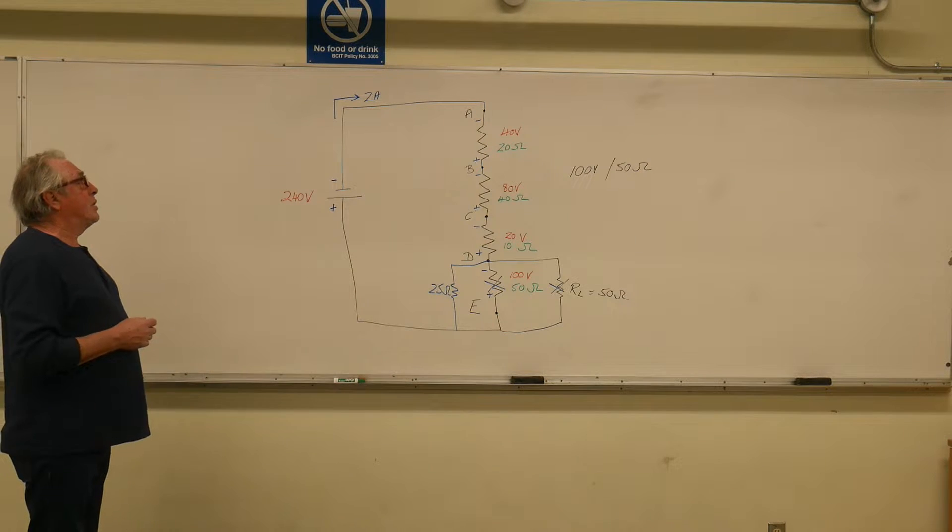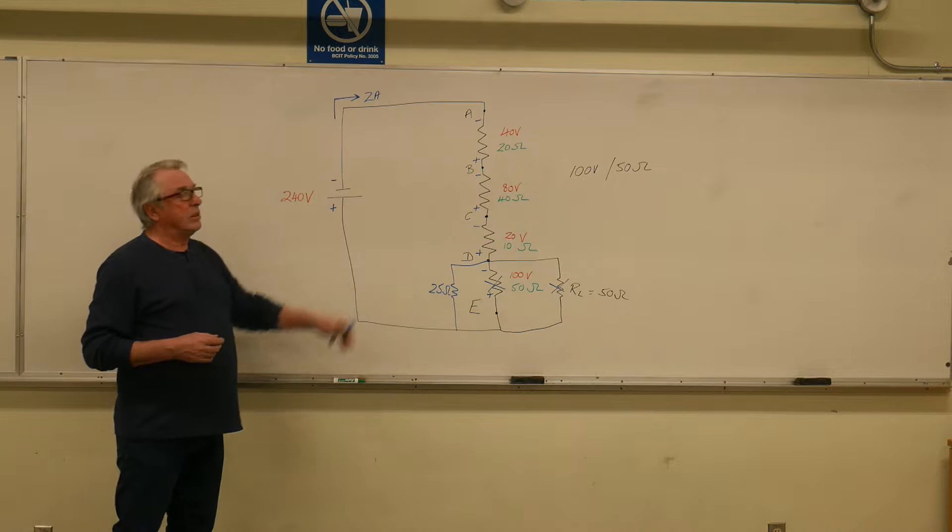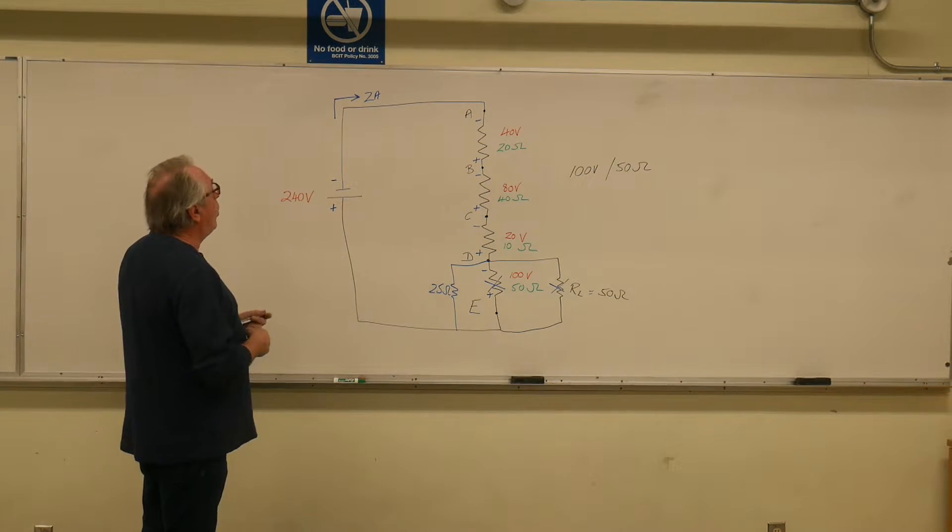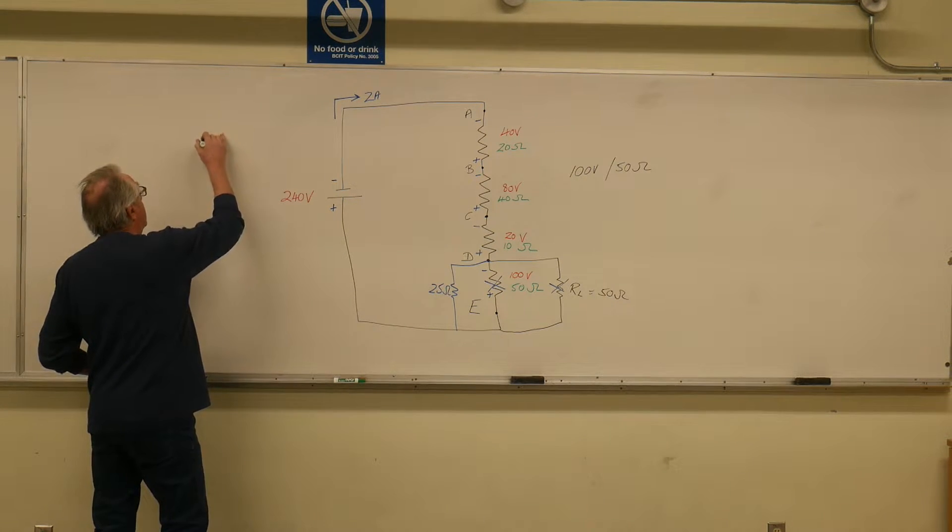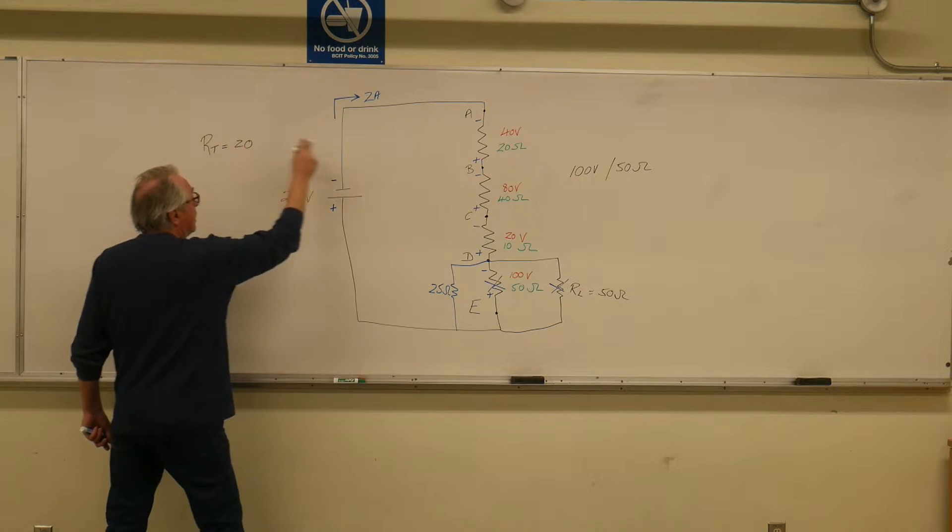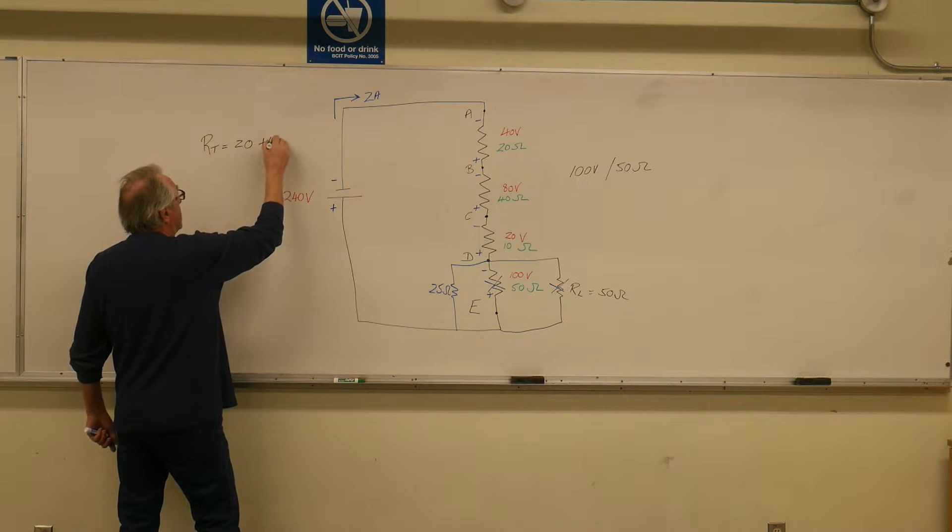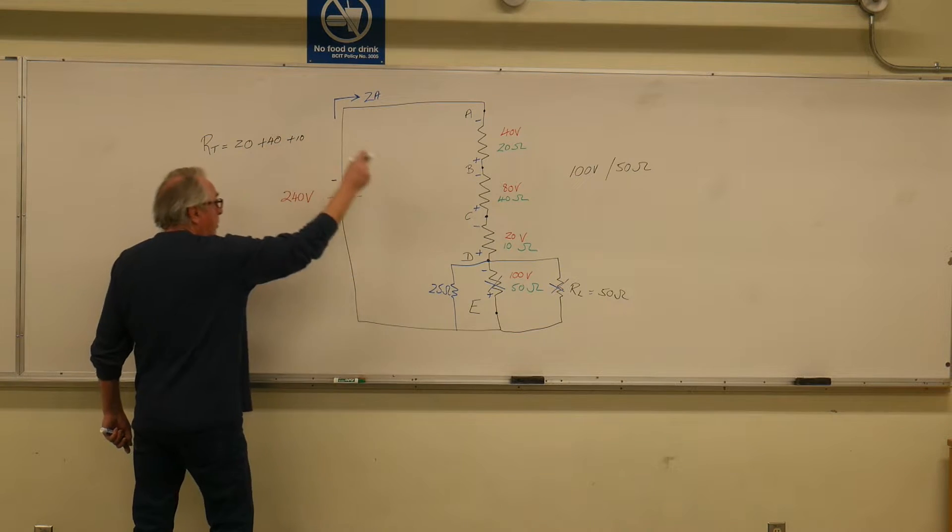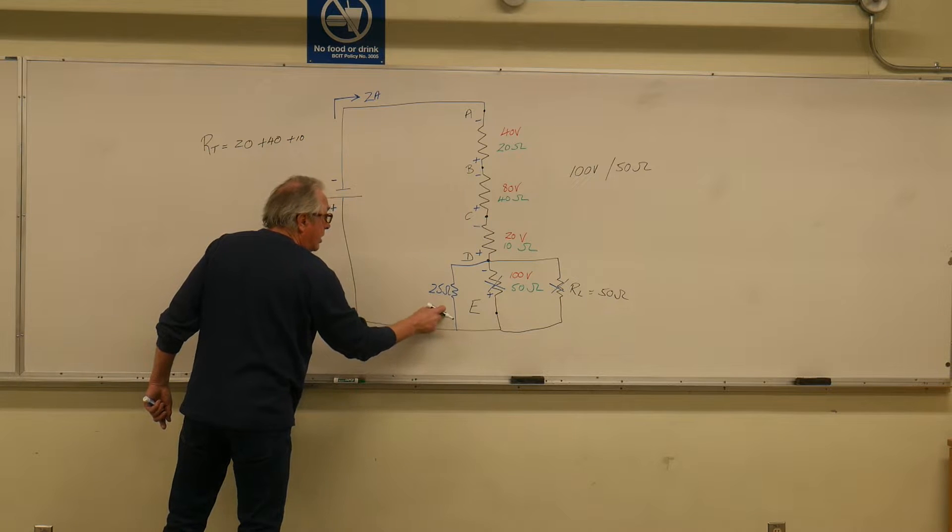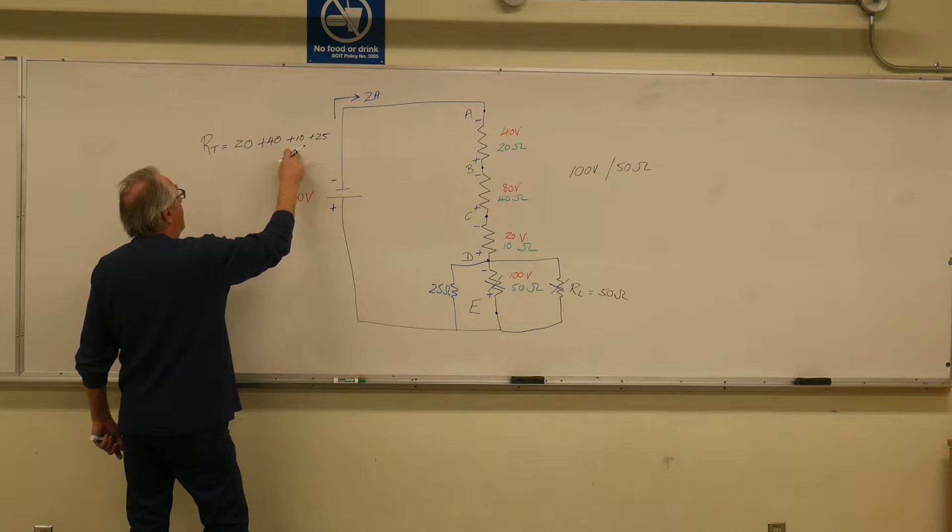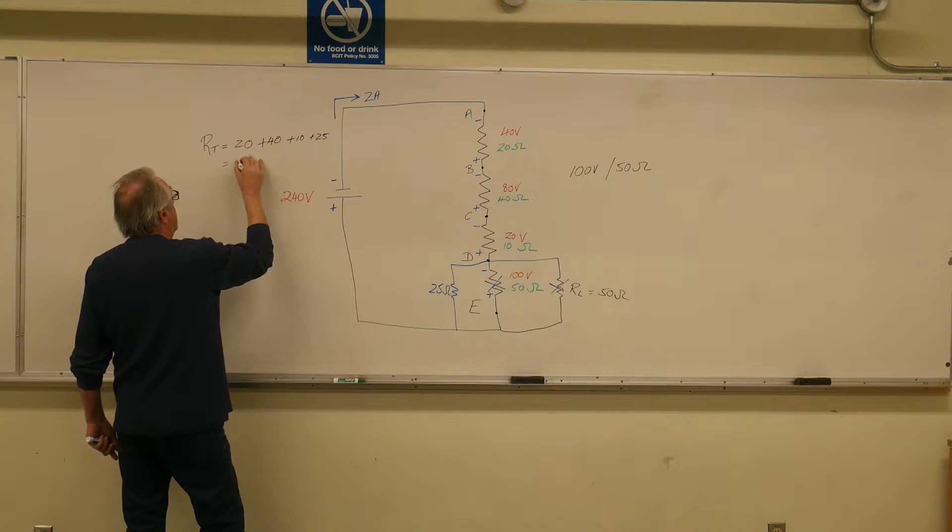Well that completely changes my circuit, doesn't it? All these calculations are probably out the window now. So let's figure out what the current will be now. The total resistance, RT, is equal to 20 ohms plus 40 ohms, plus 10 ohms, plus, not 50 anymore, 25 ohms, which is 60, 70, 95 ohms.